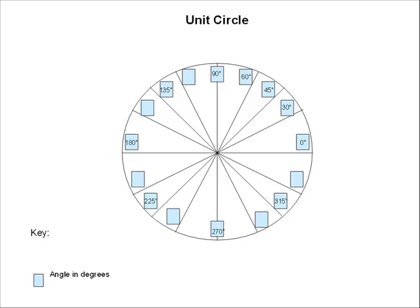Now that we've taken care of the 45 degree family, we have to look at 30 degrees and 60 degrees as well. Let's look at 120 degrees first — that's 30 degrees off of 90 degrees, and that gives us a reference angle of 180 minus 120, which is 60 degrees. The other angle in this quadrant would be 150 degrees, with a reference angle of 30 degrees. Continuing into quadrant 3, an angle with a reference angle of 30 degrees would be 210 degrees — that's 180 plus 30. Our next angle would be 240 degrees, which has a reference angle of 60 degrees. And finally in quadrant 4, we have 300 degrees with a reference angle of 60, and 330 degrees with a reference angle of 30 degrees.